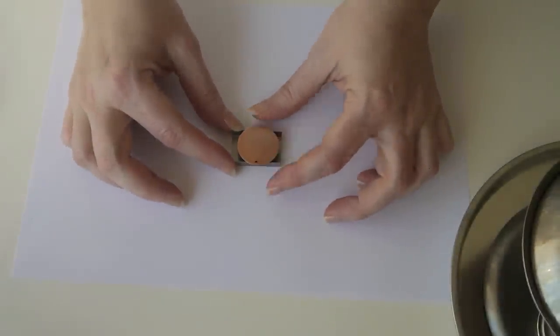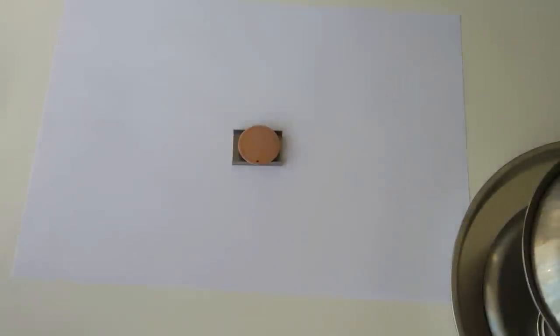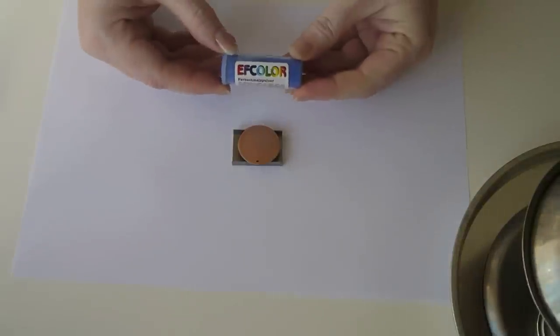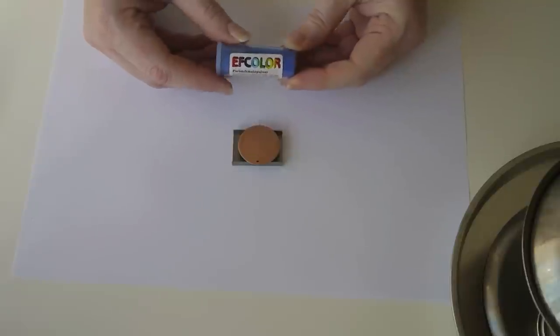Just wipe off any sanding grit before you start and then place this on your U strip. You'll find it a lot easier to lift it off once you've powdered it. Then you need your pot of F color powder. I've got dark blue here.